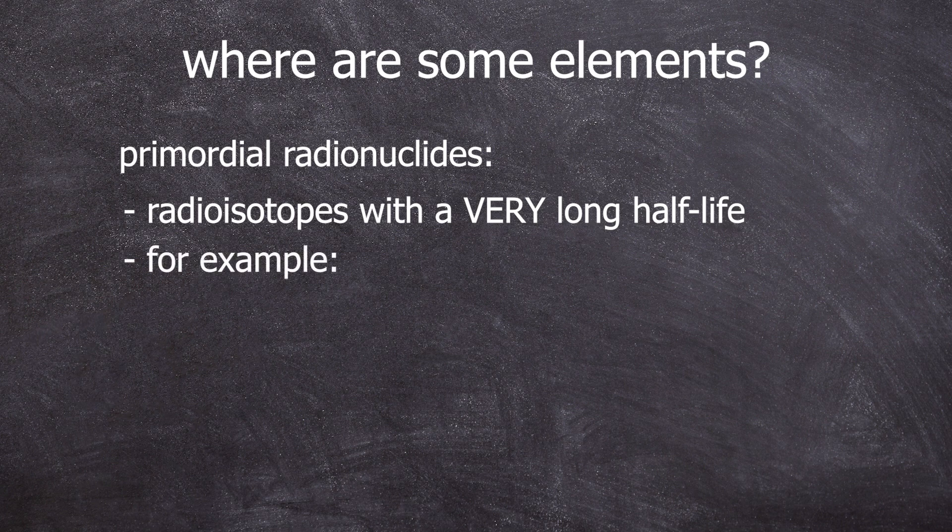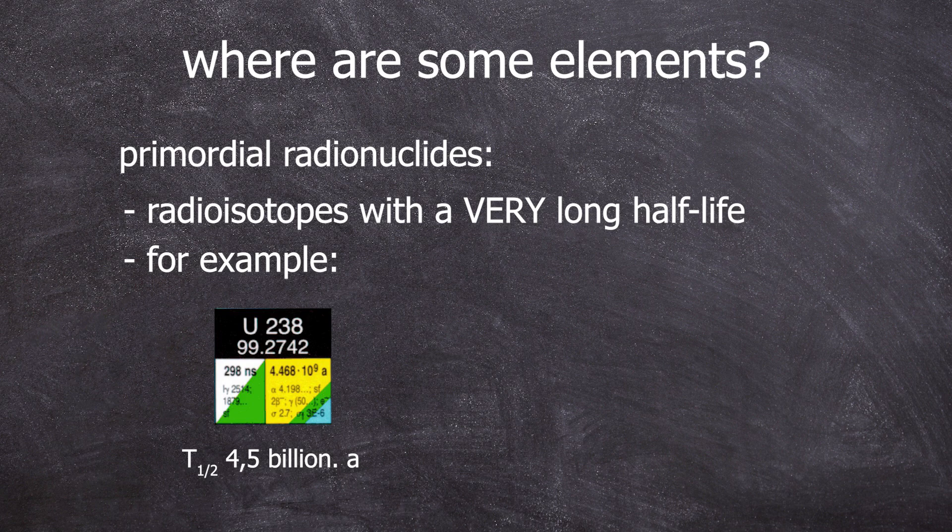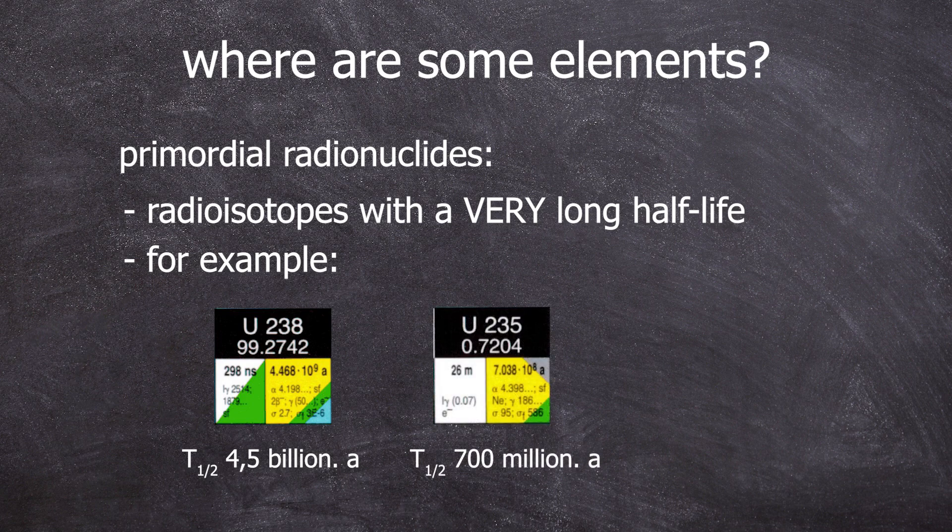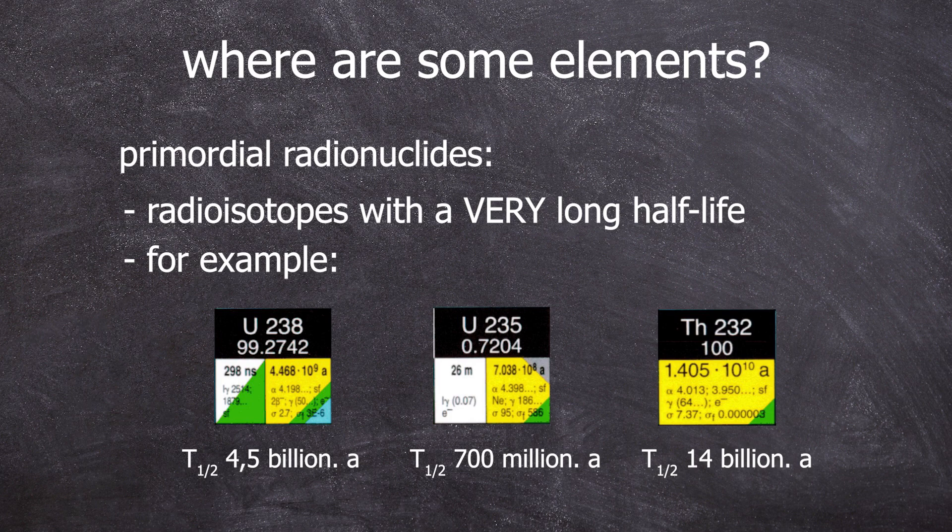The best examples are uranium-238 with a half-life of 4.4 billion years, uranium-235 with 700 million years, and thorium-232 with 14 billion years.